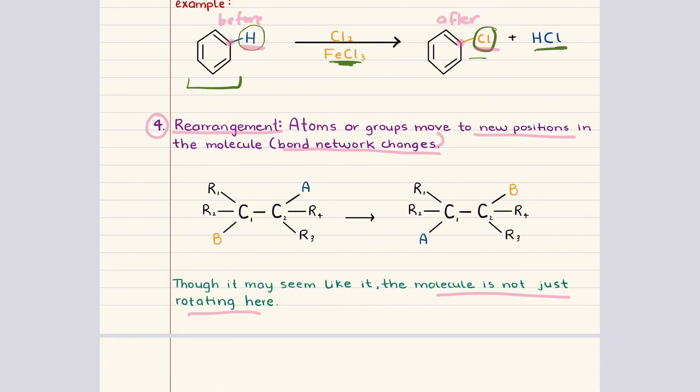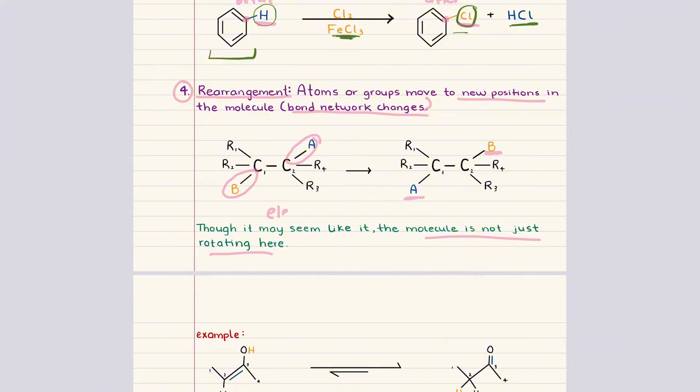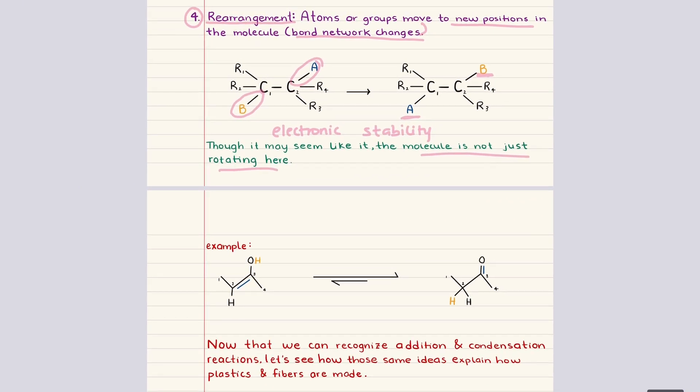The general idea is that a group originally attached to one carbon shifts to a neighboring carbon, leading to a new arrangement of substituents. And this process is driven by electronic stability, and these arrangements are extremely common in organic chemistry. A helpful example is the arrangement of a molecule where the hydroxyl group and a hydrogen migrate to give a more stable carbonyl compound. The movement of atoms within the molecule leads to a structural change where a carbon-oxygen double bond forms while a hydrogen relocates, and that shows clearly that this is not just a simple rotation, but a true reorganization of the bonding pattern.